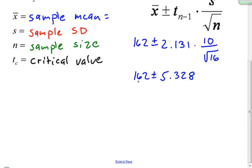So now I have 162, which is my sample mean, which is also called the point estimate. The number that you start with right here is called the point estimate, plus or minus my margin of error, which is right here.